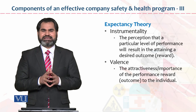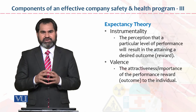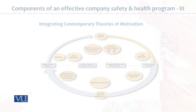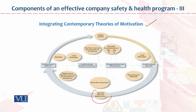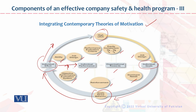Hamein maloom hai ke jab tak employee satisfied nahi hoga us waqt tak organization ki goal achieve nahi honge. Jo employee ka satisfaction level develop karna hai — isko balance bolte hain. Integrating contemporary theories of motivation — goal directed behavior, individual effort, individual goal. Yahan se yeh process shuru ho ke move kar raha hai: ability, job design, job evaluation, equity, organizational reward, individual performance, reinforcement, dominant need, objective performance — yeh saari cheezain ek doosre ko link kar rahi hain. Agar aap is theory ki mukammal application organization par kar den to aapke desired goals department aur organization ke aasani se achieve ho sakte hain.